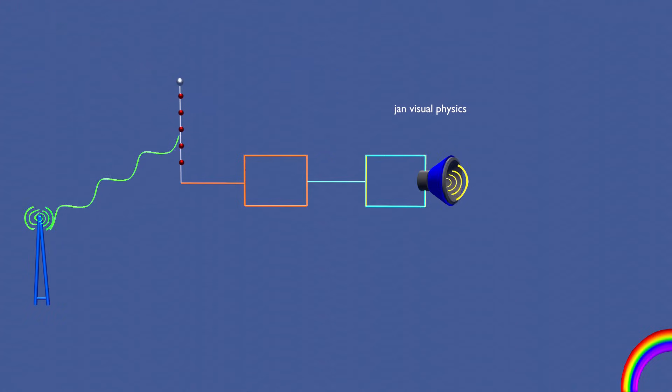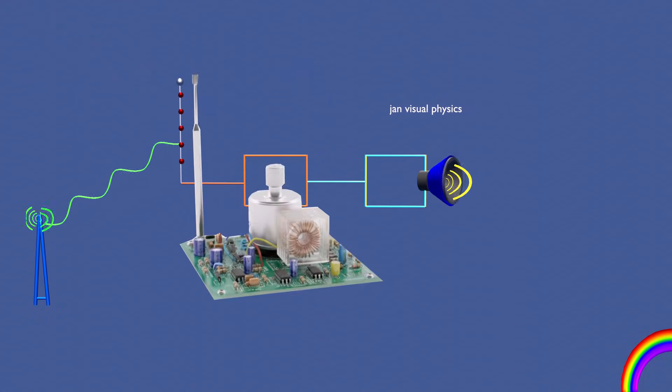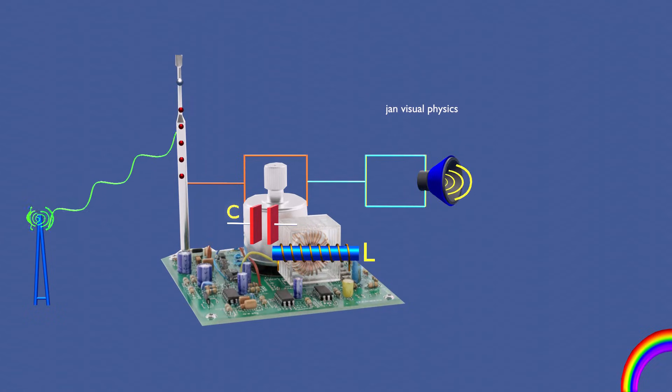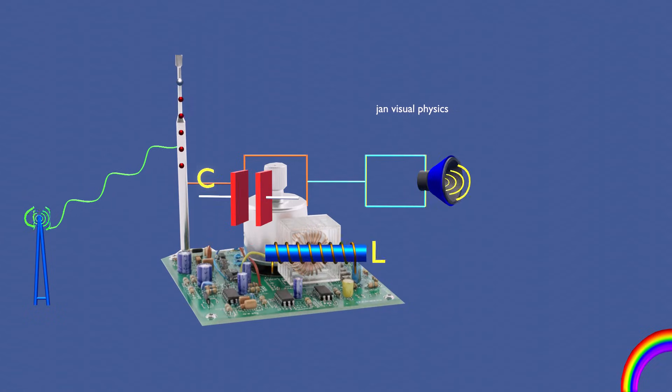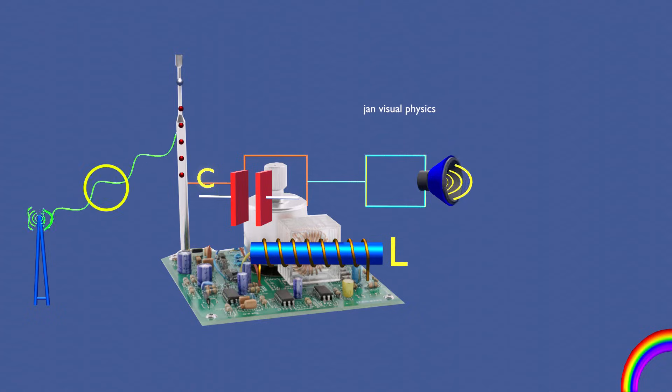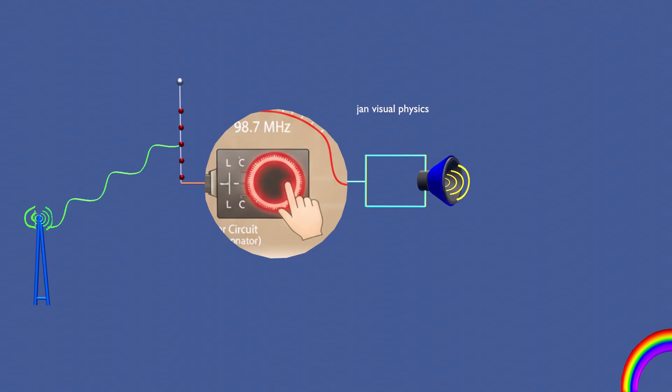To select only one, the radio uses a tuner circuit, which is a resonant LC circuit. By adjusting the capacitance or inductance, the tuner circuit resonates at a particular frequency, just like turning the dial to tune your favorite station.